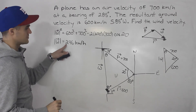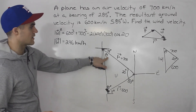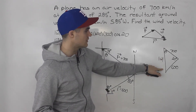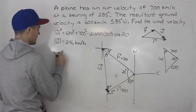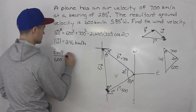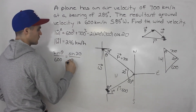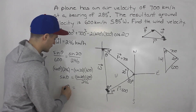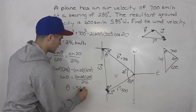We've found the wind speed. Now we need the direction, so we solve for angle theta using the sine law. Sine of theta over 600 equals sine of 20 over 246. Cross-multiplying, isolating sine theta, and taking the inverse sine gives an angle of 56.5 degrees.